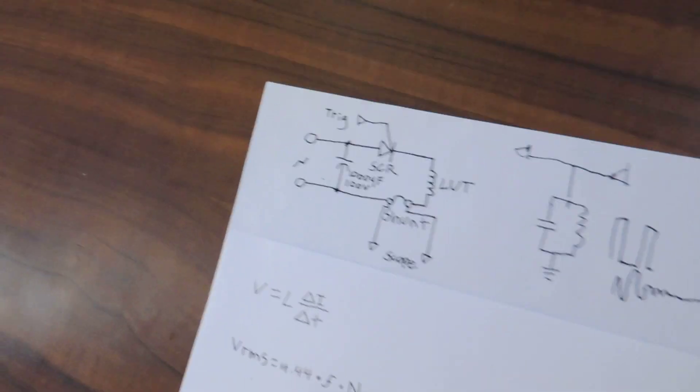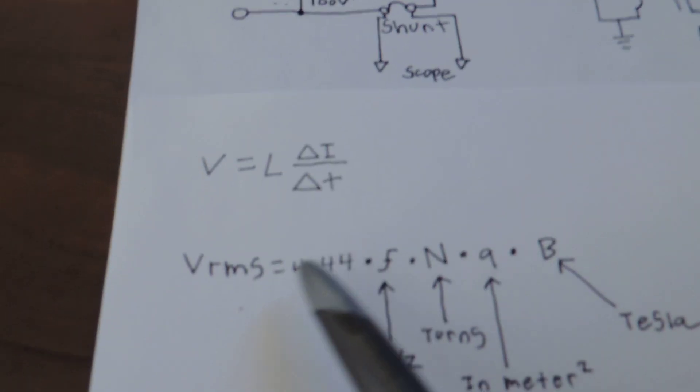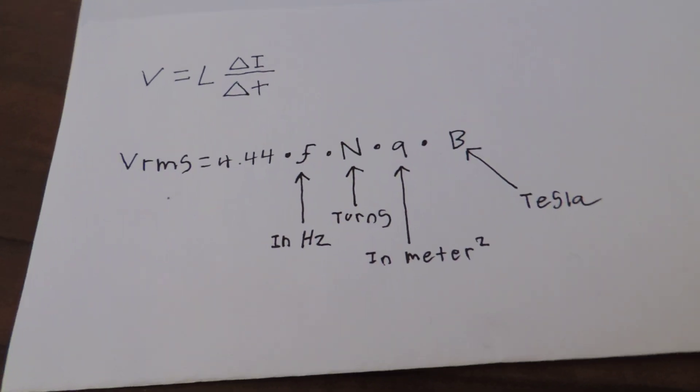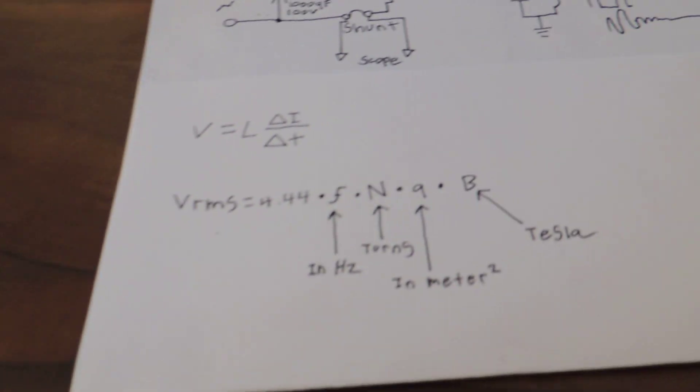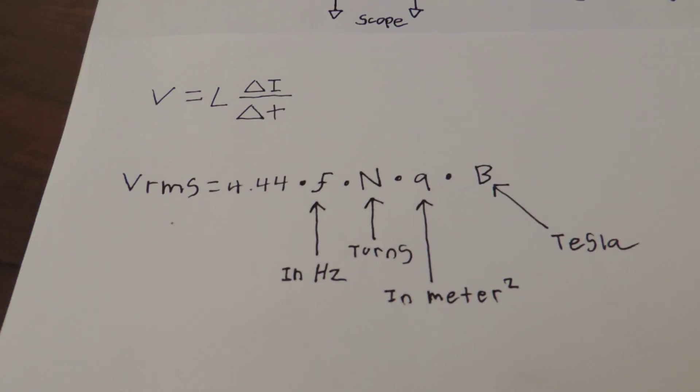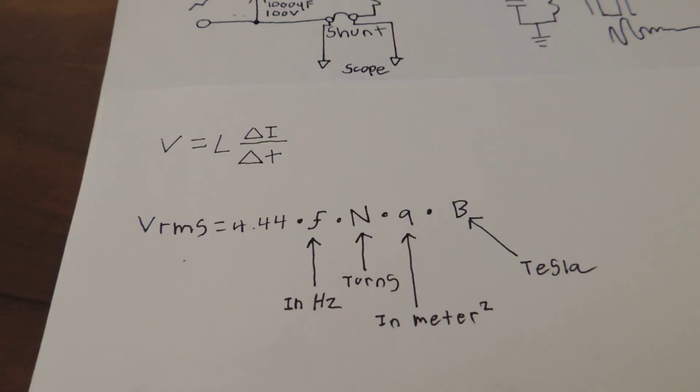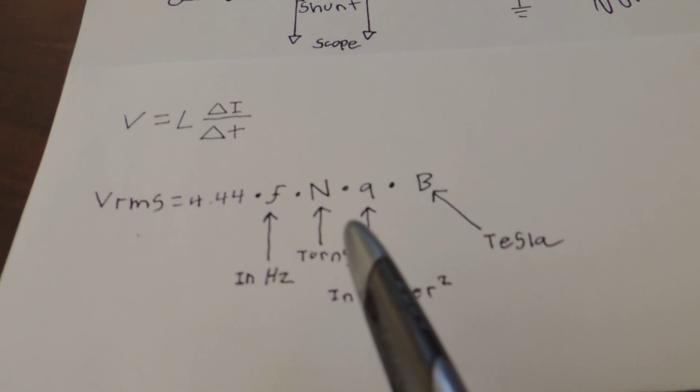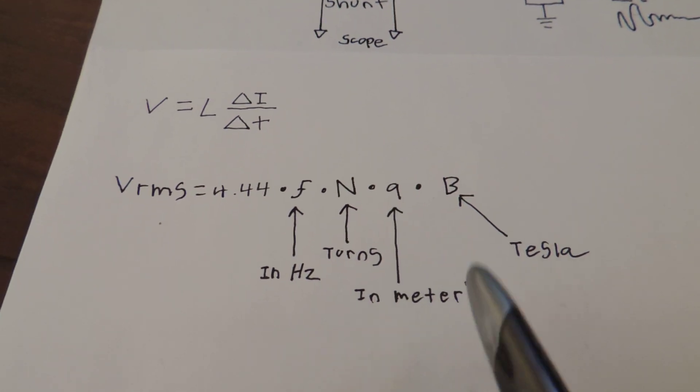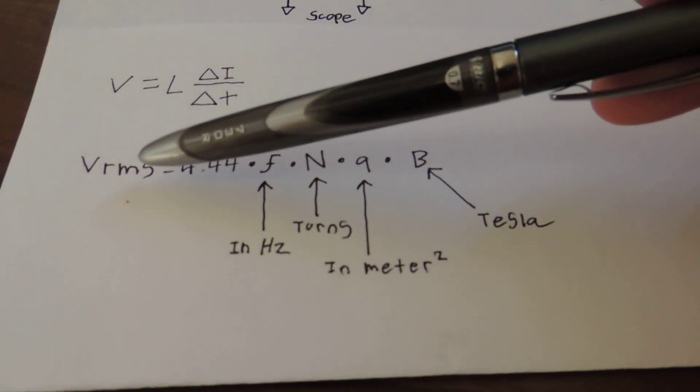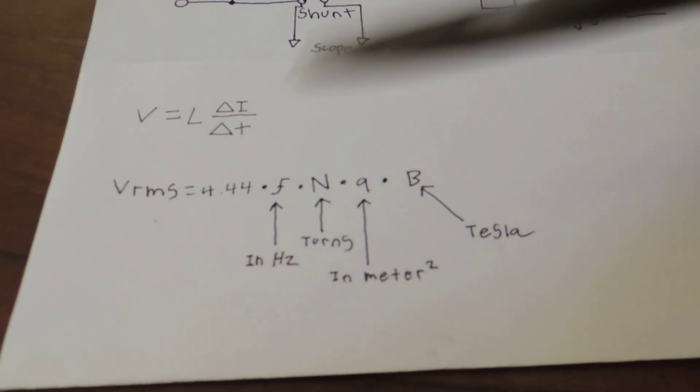The equation we're going to use for calculating transformers is this equation here. This equation is known as the universal transformer EMF equation. It should be noted that this equation is for sinusoidal voltages and currents being applied to the transformer. However, this equation can be used to model square wave drive as well. It's not as close of an approximation, but it will get you very close.